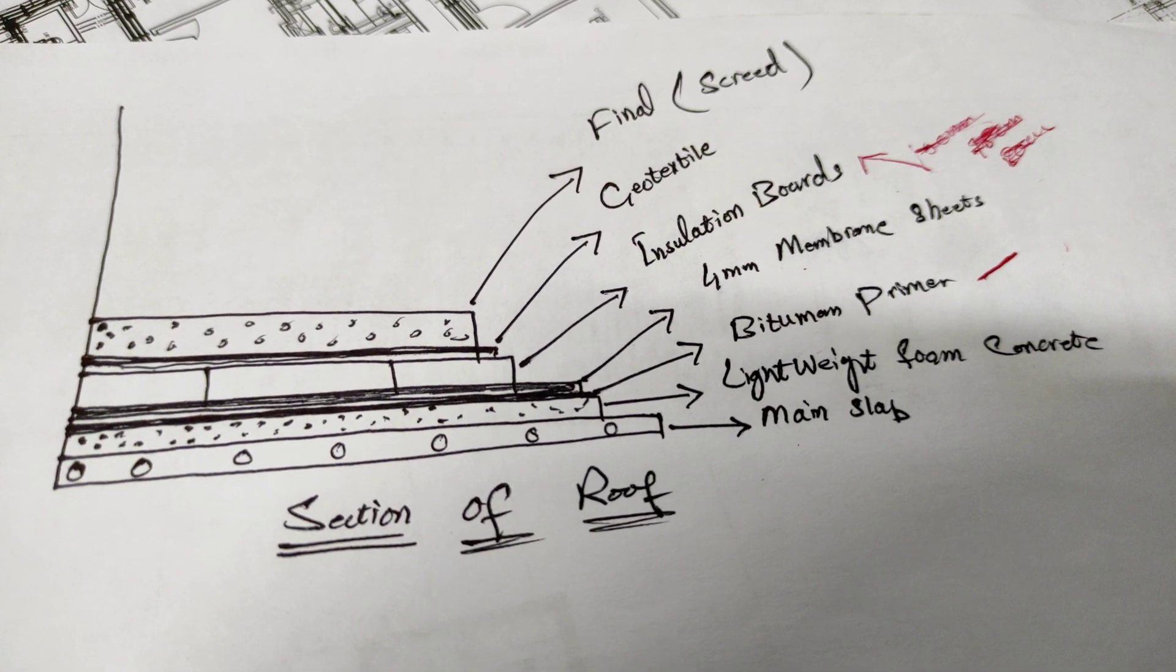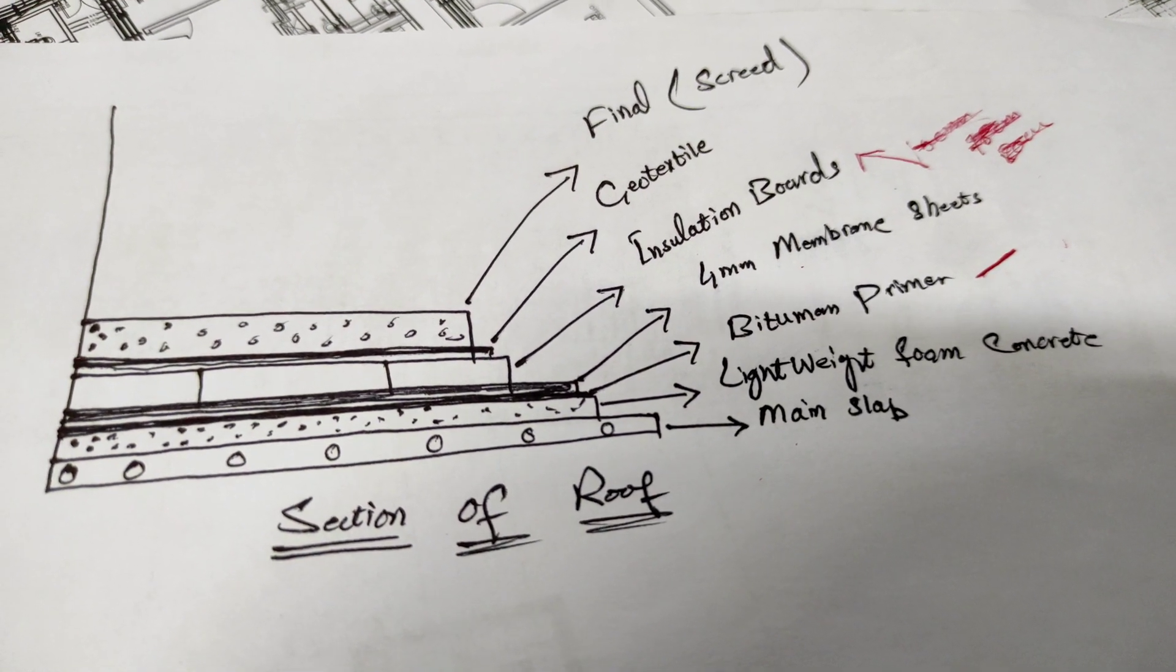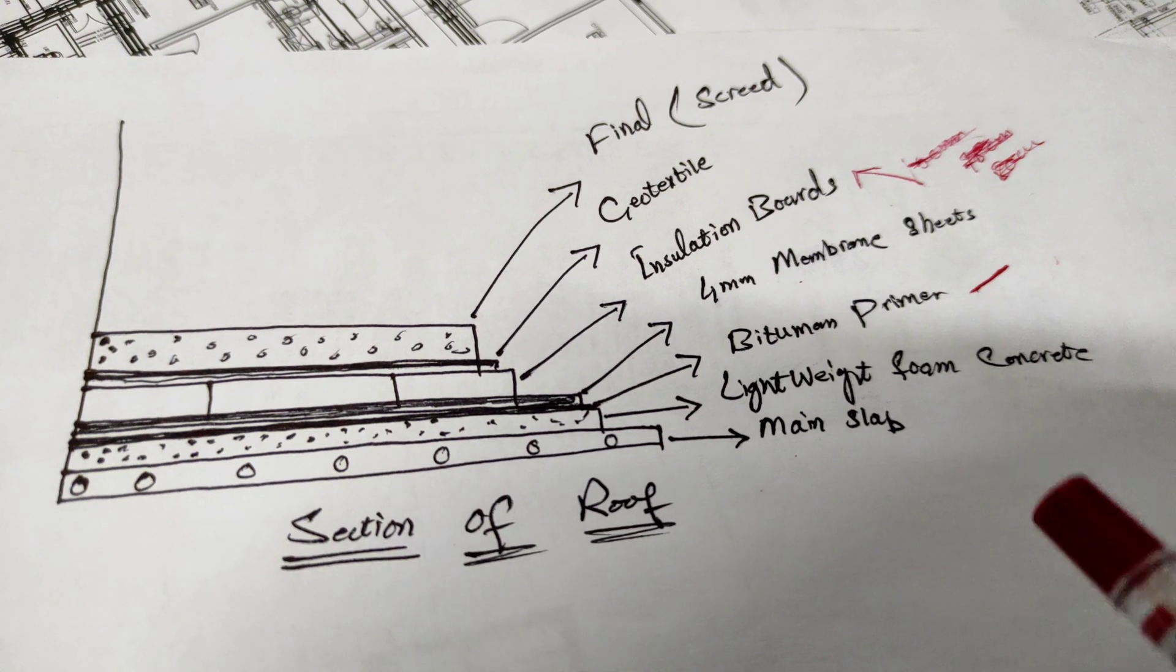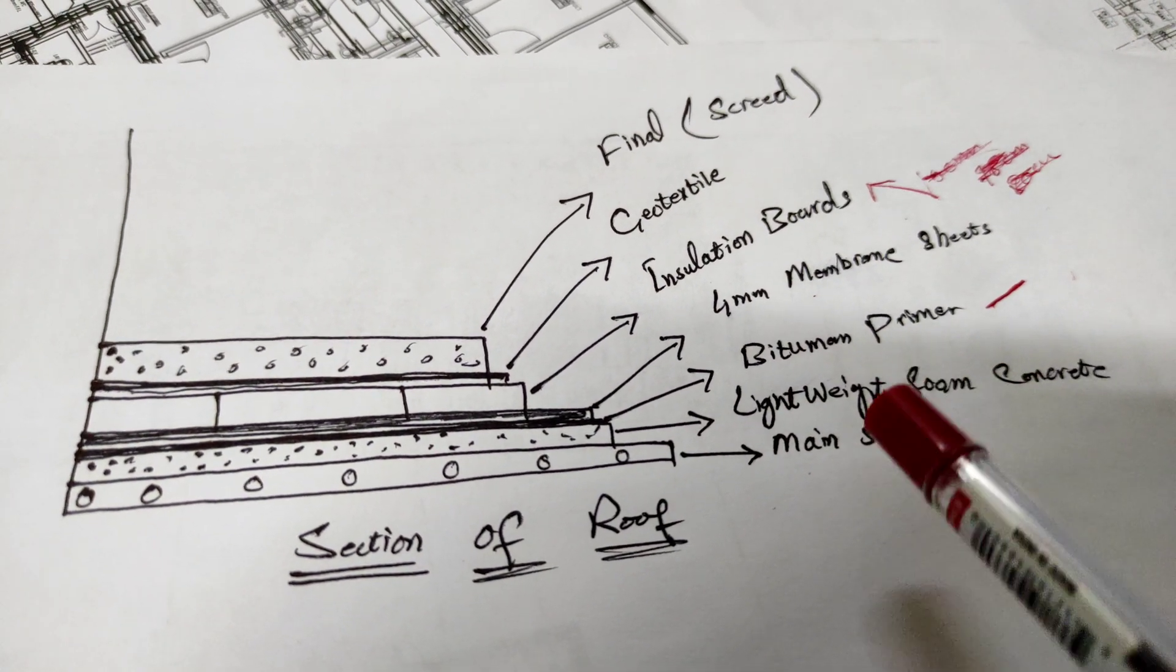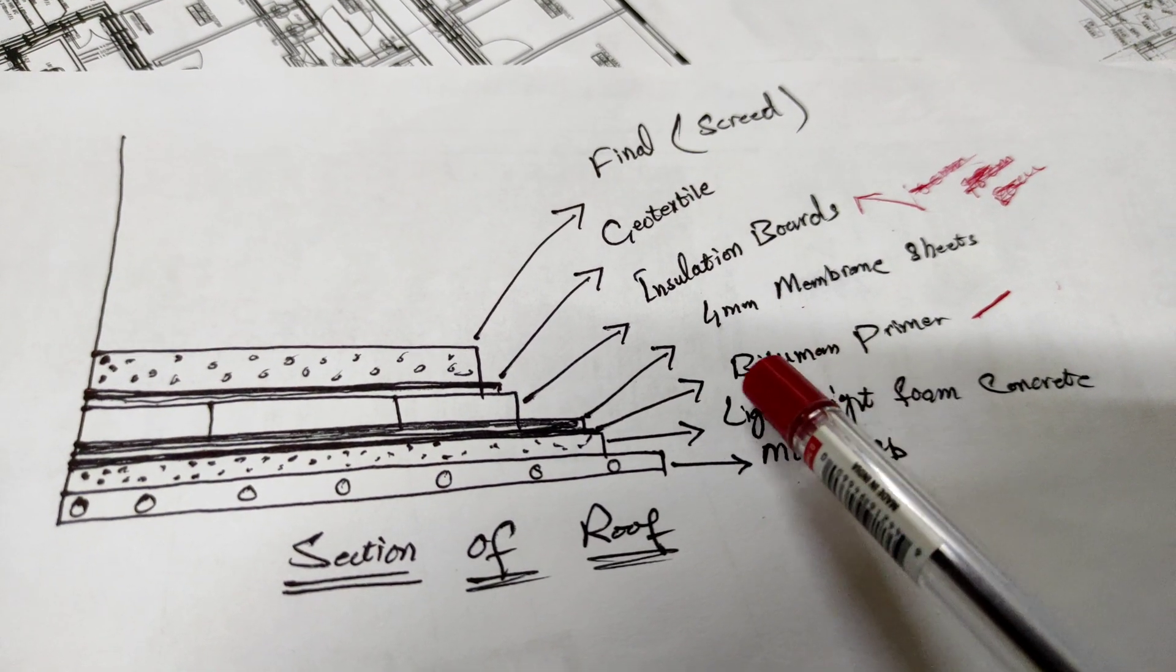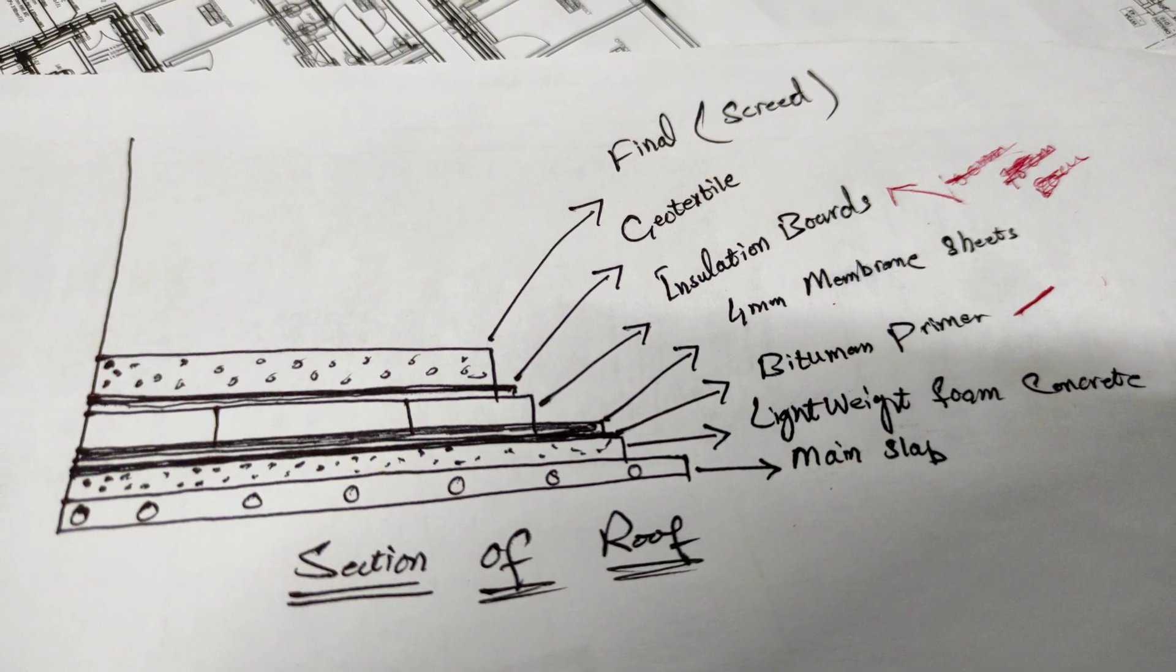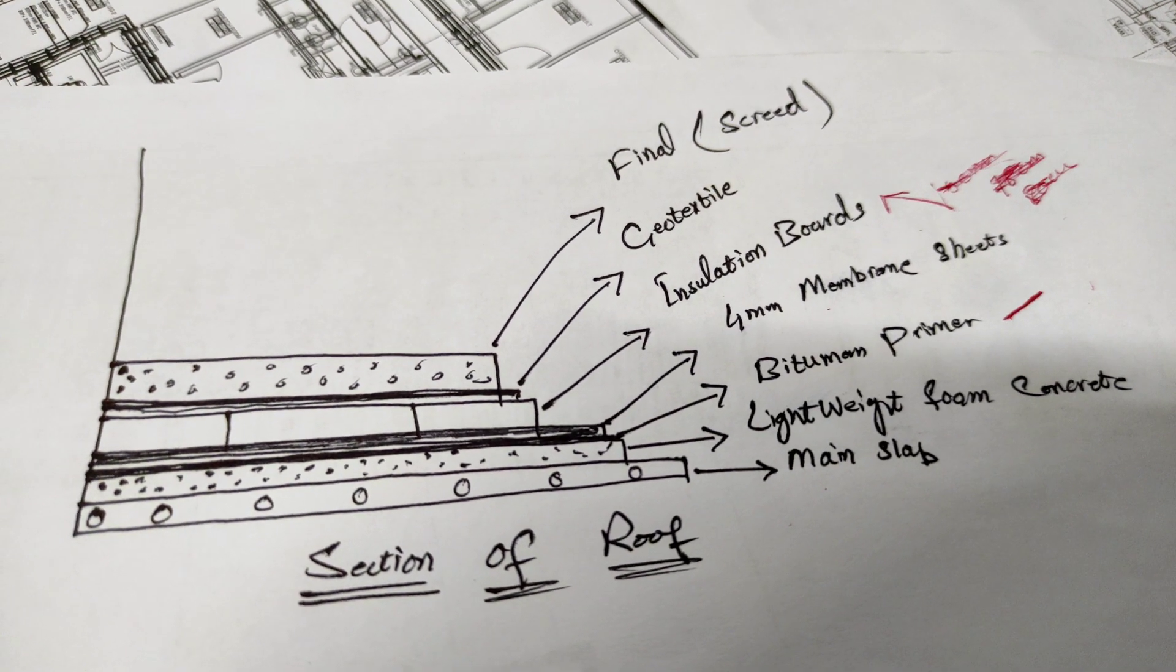One is cement, second is foam chemical, and third is water. After drying this, we will lay bitumen primer - one layer you can apply with brush or roller. After this, we will lay 4mm thickness plain membrane sheets.